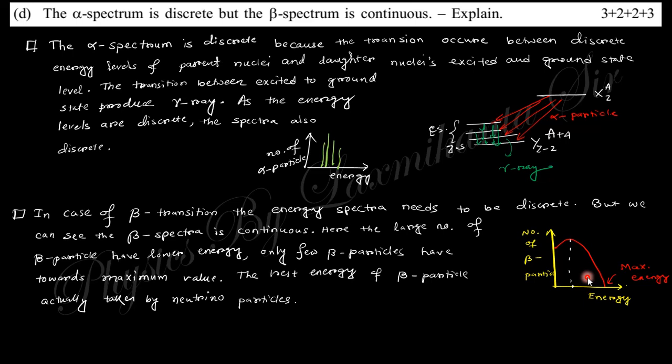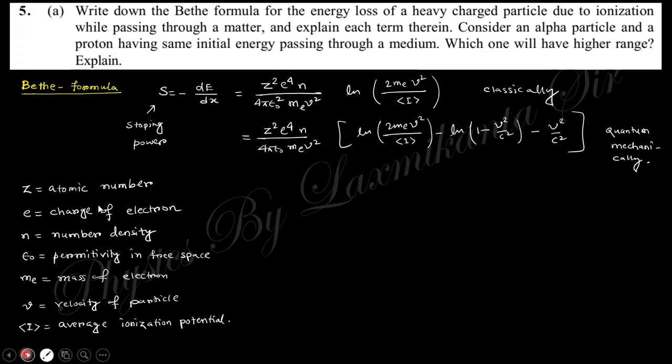In alpha decay there is no neutrino involved, so all the decay energy goes to the alpha particle giving discrete values. In beta decay, weak interaction produces a neutrino which carries away part of the energy, making the beta spectrum continuous.